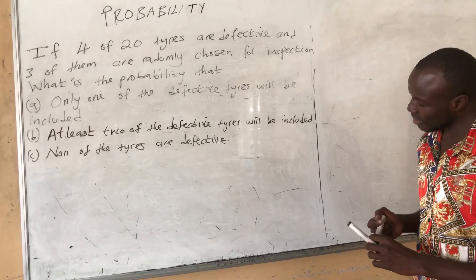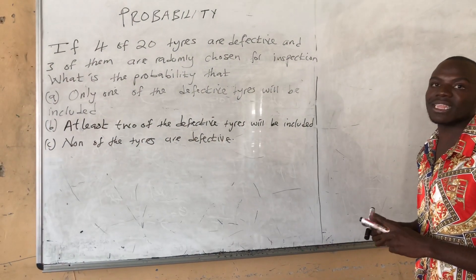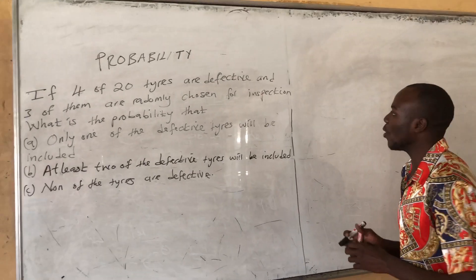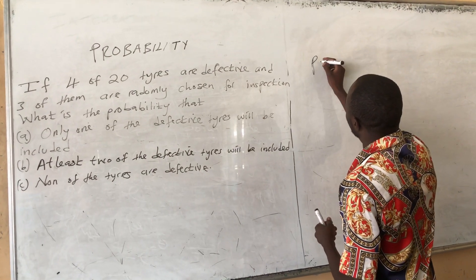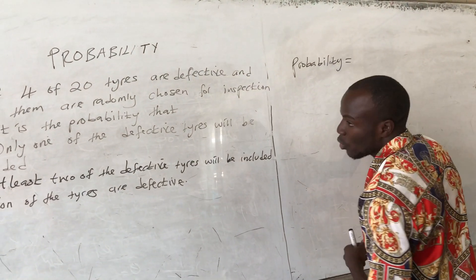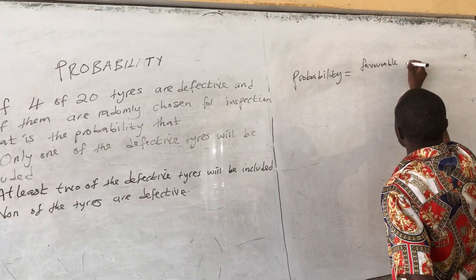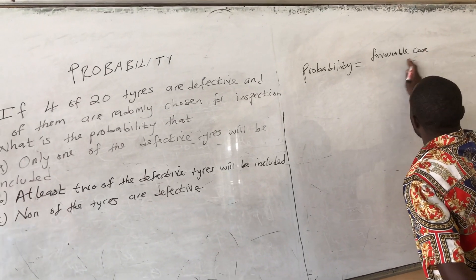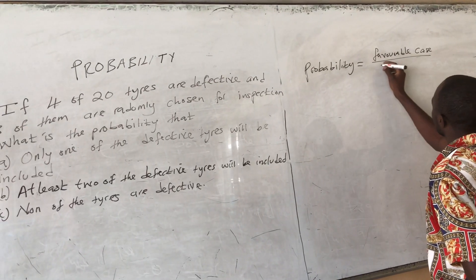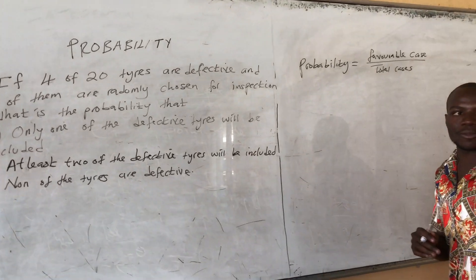To solve this question, first you need to understand that probability is just the likelihood or the chances of an event happening. The general formula for probability is: probability equals favorable cases or outcomes divided by the total cases or total outcomes.